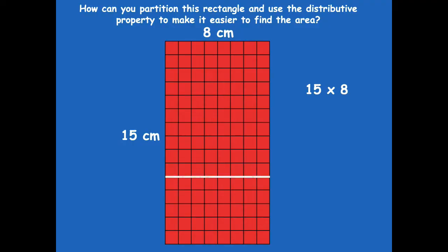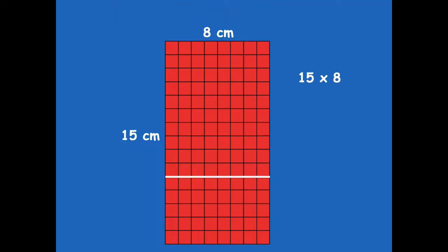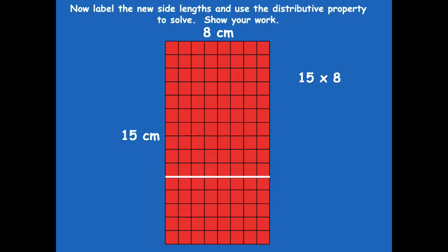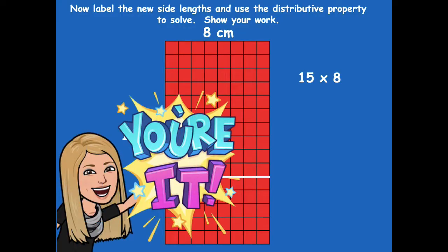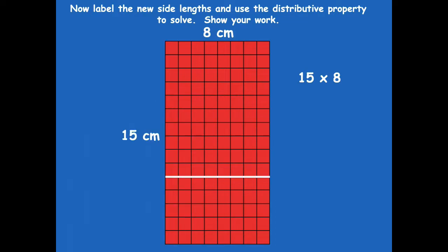Here's where I chose to draw it — I split it right here because it gave me nice easy numbers. Label the new side lengths on your diagram and show how you can use the distributive property. In the bottom portion I count one, two, three, four, five — so there's 5 centimeters. Count the top portion as well, then use those numbers to apply the distributive property. Pause the video, label your new side lengths, and use the distributive property to break apart that factor of 15 into easier parts to multiply.